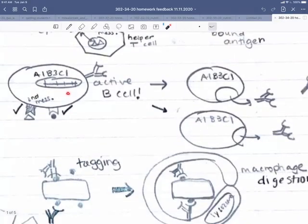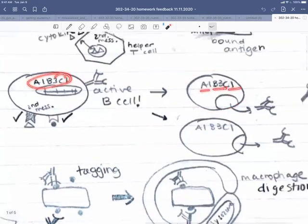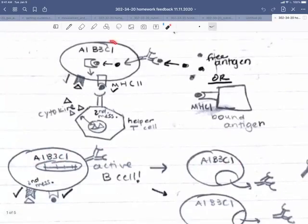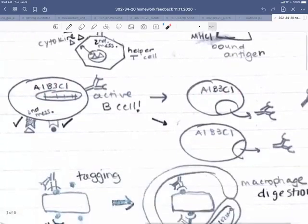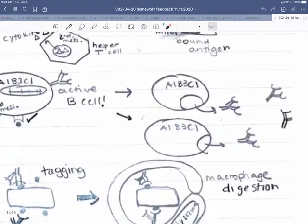So now our activated B cell goes through multiple rounds of division. So we get many copies and now it's all A1, B3, C1, same as here and same as up here. So now we have many mature B cells that are producing antibodies.